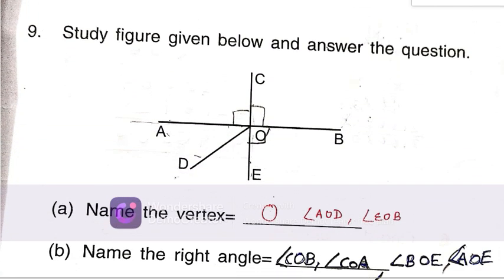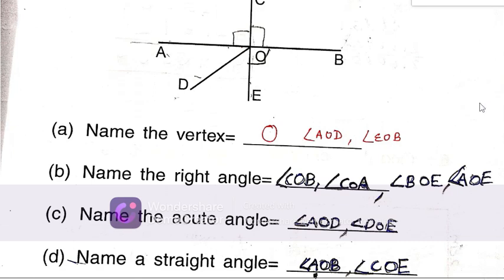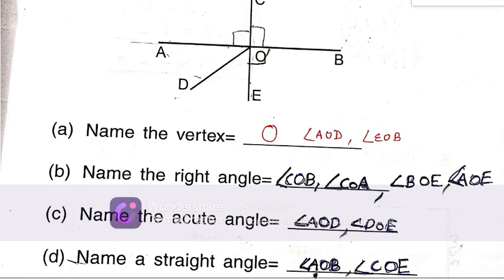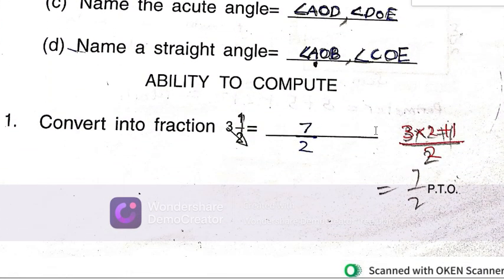Study the figure. Convert 3 and 1 by 2: 3 times 2 is 6 plus 1 is 7 by 2.